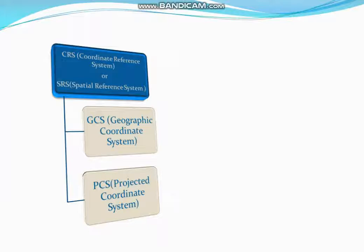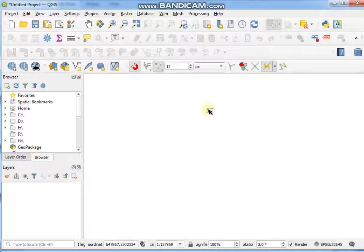The Projected Coordinate System is defined on a flat two-dimensional surface. It has constant length, angle, and area across two dimensions, and it is always based on a plane or rectangular flat area. As an example of PCS, I will talk about UTM — UTM stands for Universal Transverse Mercator. Now let's start the video.